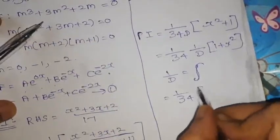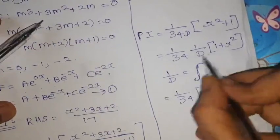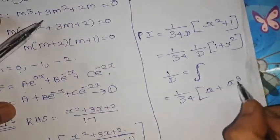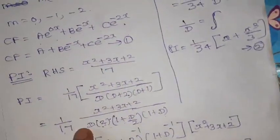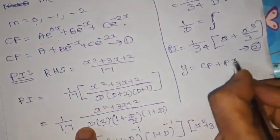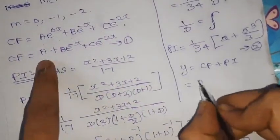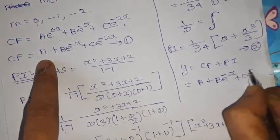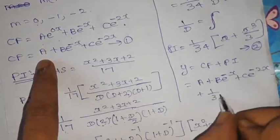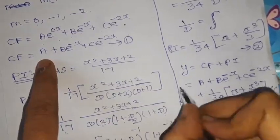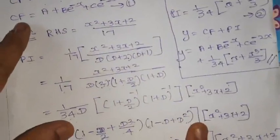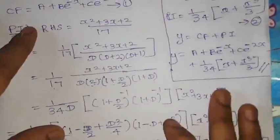The complete solution is y = CF + PI, giving y = A + B·e^(−x) + C·e^(−2x) + (1/34)(x + x³/3). This is the complete solution for the second problem.